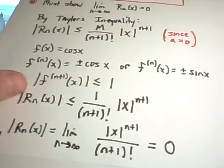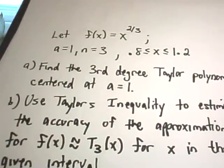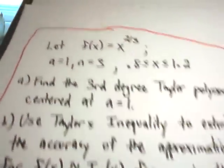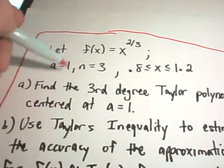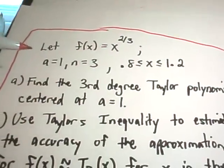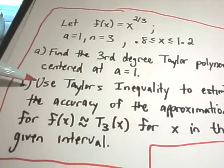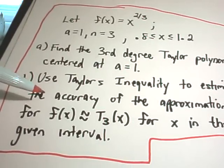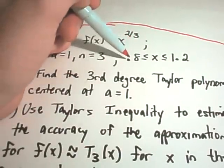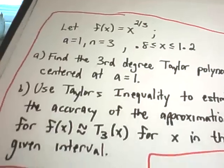So let me do one other example — a numerical one. Suppose that f of x is the function x to the two-thirds power. Our function is x to the two-thirds. We're going to center this at the value a equals one, and we're going to let values of x range between 0.8 and 1.2. The first thing I'm going to do is find the third-degree Taylor polynomial for this function centered at a equals one, and then use Taylor's Inequality to estimate how close this third-degree Taylor polynomial will be for any value between 0.8 and 1.2.